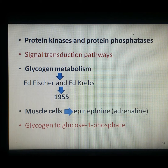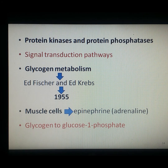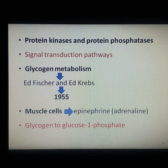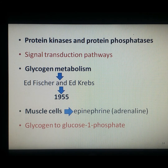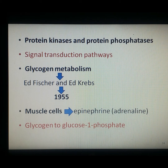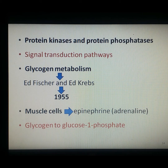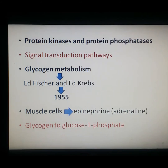In signal transduction pathways, one kinase activates a second kinase, which may activate yet another kinase. The sequential action of a series of protein kinases can transmit a signal received at the cell surface to target proteins within the cell, resulting in changes in cell behavior in response to environmental stimuli. The prototype of protein kinase action came from studies of glycogen metabolism conducted by Fischer and Krebs in 1955.